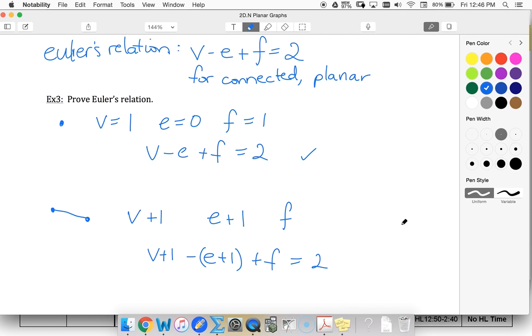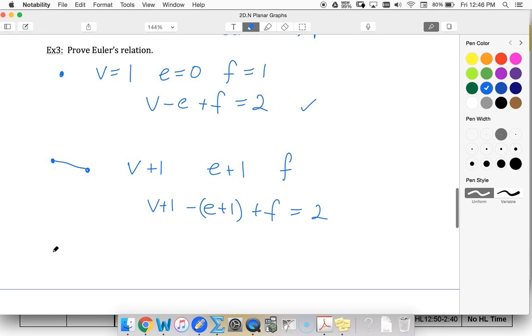The other way to continue creating a connected planar graph is if we already have a number of vertices and edges. We can add an edge between two existing vertices. So we can leave our vertices unchanged. Our new vertices is the same as our old number of vertices.